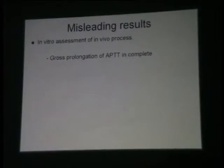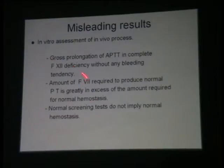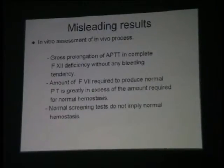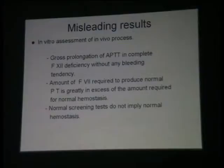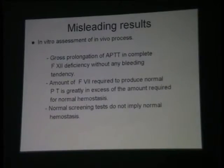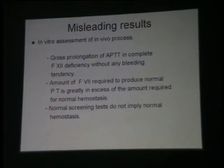Why can misleading results occur? We know that in factor 12 deficiency, as already mentioned, clinically there is no bleeding. However, in the laboratory, you will have blood which has not clotted and APTT which is prolonged, and yet you have a normal prothrombin time. Factor 7 required to produce a normal PT is present in excess because of the interaction of the two cascades. Please remember: screening tests do not imply there is no defect in coagulation. You can have a coagulation factor deficiency and yet all these tests may be normal.